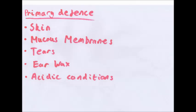The primary defence is very simple. Skin blocks out most things. Mucous membranes, so if you have the lining of the throat, you have cilia and goblet cells. Goblet cells produce mucus which traps particles and pathogens. Cilia wafts it up to the back of the throat, you swallow it, digest it in your stomach. Simple.